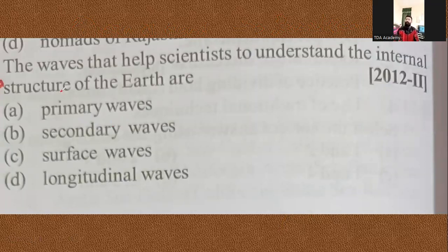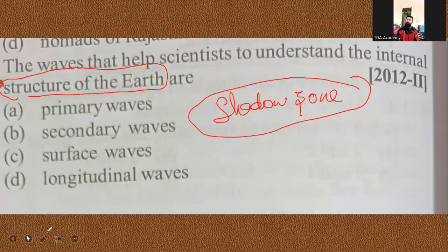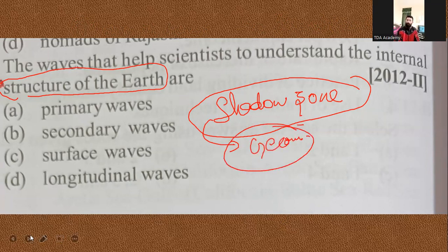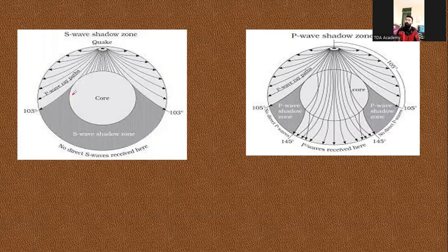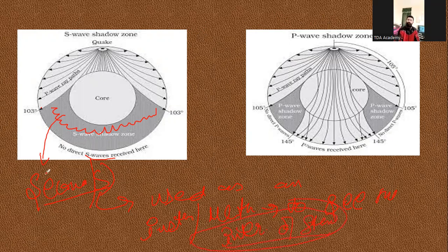The next question asks about the wave that helps scientists understand the internal structure of the Earth — the most important topic of earthquakes, which is the shadow zone. This question is entirely related to that topic. If you have good knowledge of the shadow zone, as I have already discussed in our geography course, you'll know that the S-wave has the largest shadow zone. Because of having the largest shadow zone, the secondary wave — that is, the S-wave — is used as an instrument or methodology to study the internal structure, or interior, of the Earth. So secondary waves is the right answer.